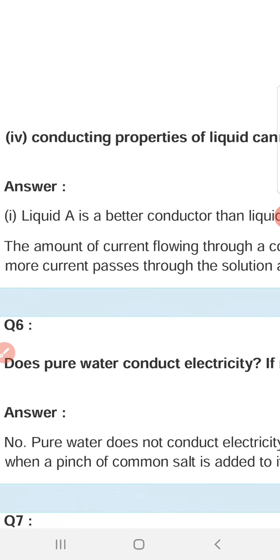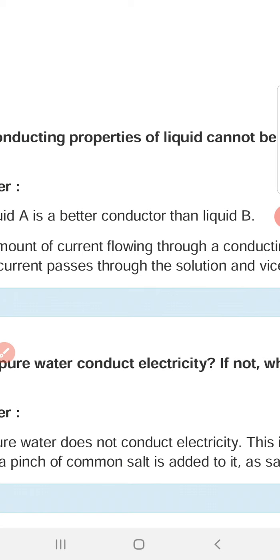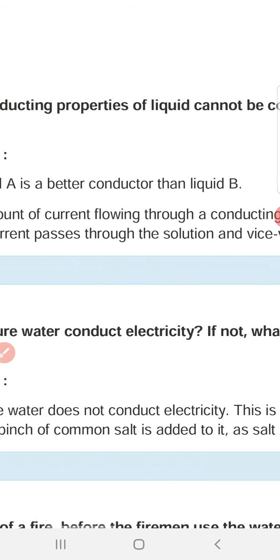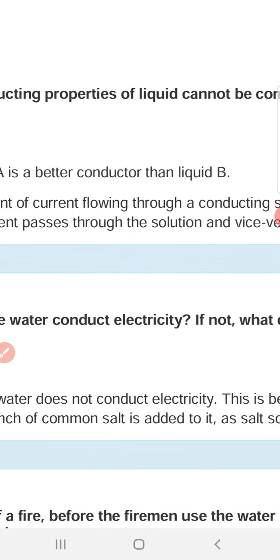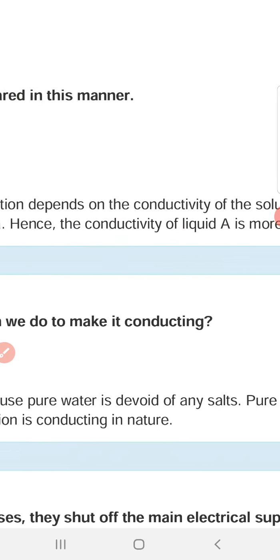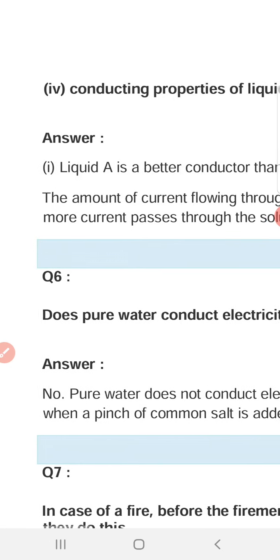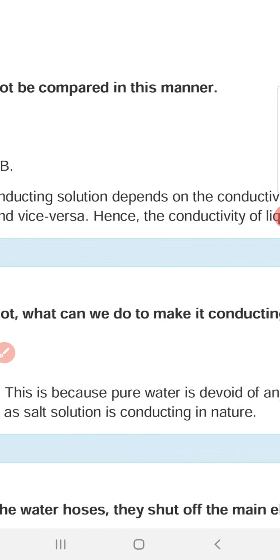The answer is liquid A is a better conductor than liquid B. This is because the bulb glows brightly for liquid A. The amount of current flowing through a conducting solution depends on the conductivity of the solution. With more conductivity, more current can pass through. Hence, the conductivity of liquid A is more than the conductivity of liquid B.